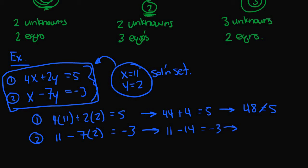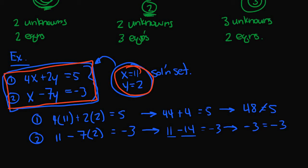For equation 2, we have 11 minus 7 times 2, which is 14, so 11 minus 14 equals negative 3, which equals the right-hand side of negative 3. This is true. However, because the solution set x equals 11 and y equals 2 did not satisfy all of the equations in this system, this solution set is not valid.